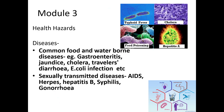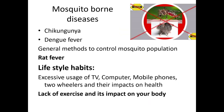Module 3 discusses various health hazards, including malnutrition diseases, food and waterborne diseases such as gastroenteritis, jaundice, and cholera. It also covers sexually transmitted diseases like AIDS, Hepatitis B, syphilis, and gonorrhea. Then vector-borne diseases like mosquito-borne diseases, chikungunya, dengue fever, and methods to control mosquito population, as well as rat fever. Finally, it covers lifestyle habits like excessive usage of computers, mobile phones, and two-wheelers, their impacts on health, and the effects of lack of exercise.